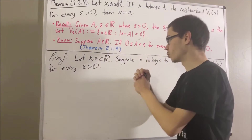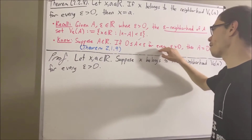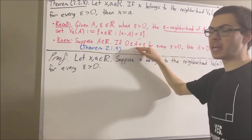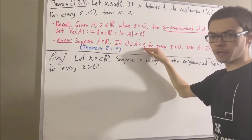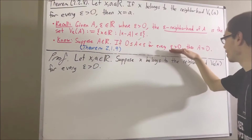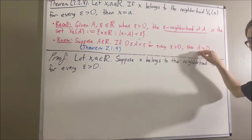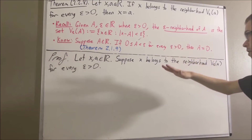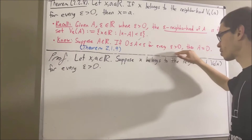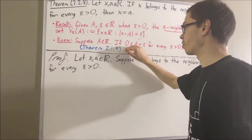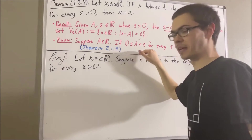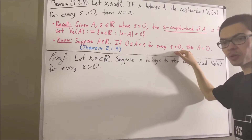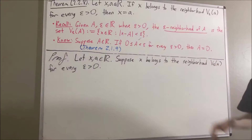What we're going to do is show that for every epsilon greater than zero, zero is less than or equal to the absolute value of x minus a, which is less than epsilon. If we can show that, by this theorem it implies that the absolute value of x minus a is equal to zero. Since we're trying to prove a statement about all positive real numbers, give me an arbitrary positive real number — I'll call it epsilon.